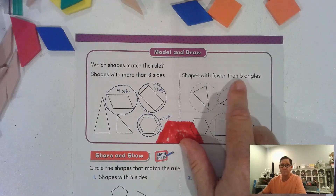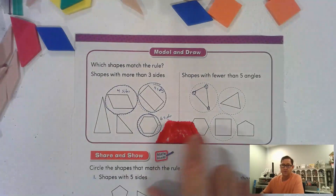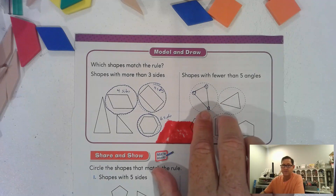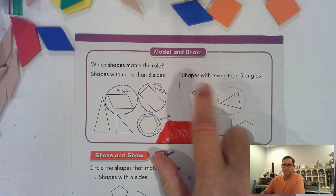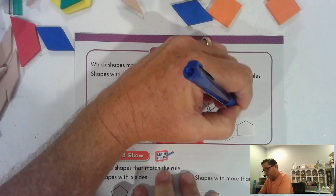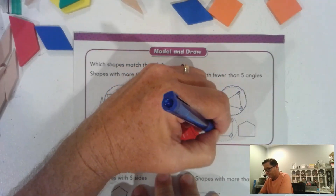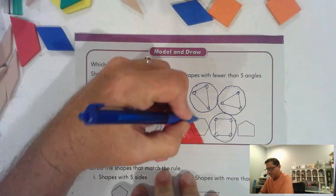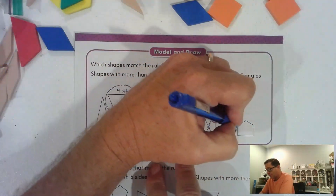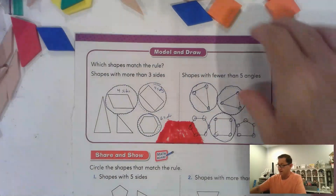And then this rule: shapes with fewer than five angles. Remember, we can just circle the vertices, which are the corners — that's where two edges meet. Where two sides meet is a vertex. This one has three, so that's fewer than five. One, two, three — that one's also less than five. One, two, three, four. One, two, three, four, five, six — nope, that one's more than five. One, two, three, four, five — five is not fewer than five.